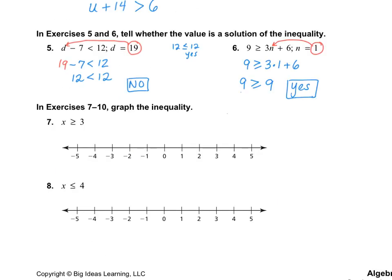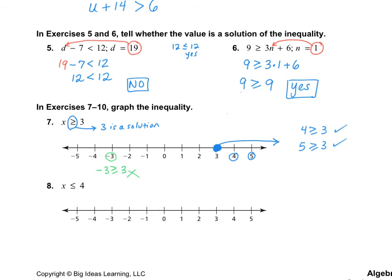Numbers 7 through 10 ask us to graph the inequality. Number 7: x ≥ 3. We place our circle at 3. Since it's greater than or equal to, 3 is a solution, so we color in the circle. We go to the right — 4 and 5 are also solutions. You can double-check by plugging values in: is 4 ≥ 3? Yes. Is 5 ≥ 3? Yes. Is −3 ≥ 3? No — so that's not part of the solution set. Only 3 and everything above it is a solution.